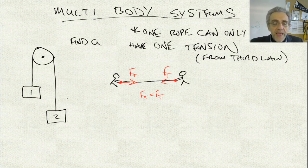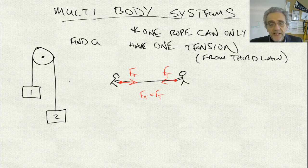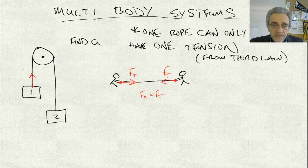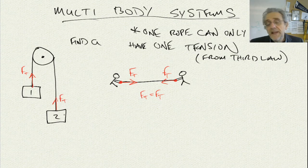Now, if I draw the free body diagram for each mass — I know ropes can only pull — so this is going to be FT up on one mass, and FT up on the other. And I also know that these two forces are going to be equal.